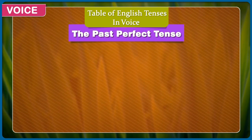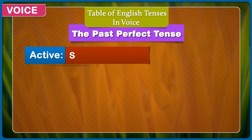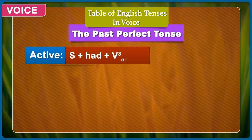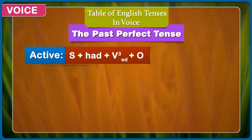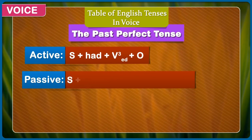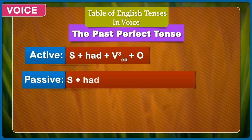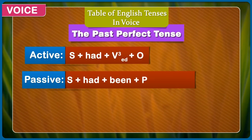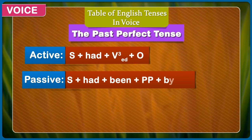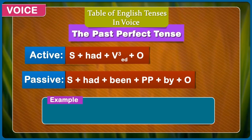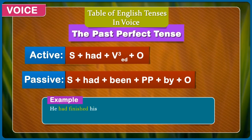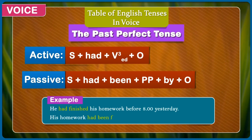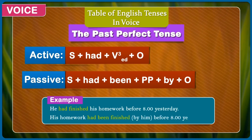The past perfect tense. Active: subject + had + third form of verb (-ed) + object. Passive: subject + had + been + past participle + by + object. Example: He had finished his homework before 8 yesterday. His homework had been finished by him before 8 yesterday.